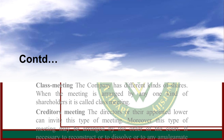Creditor Meeting: The directors or other appointed persons can invite this type of meeting. Moreover, this type of meeting may be arranged by order of a court if necessary to reconstruct, dissolve, or amalgamate the company, or to preserve the rights of the creditors. This type of meeting is invited by the proper authority.